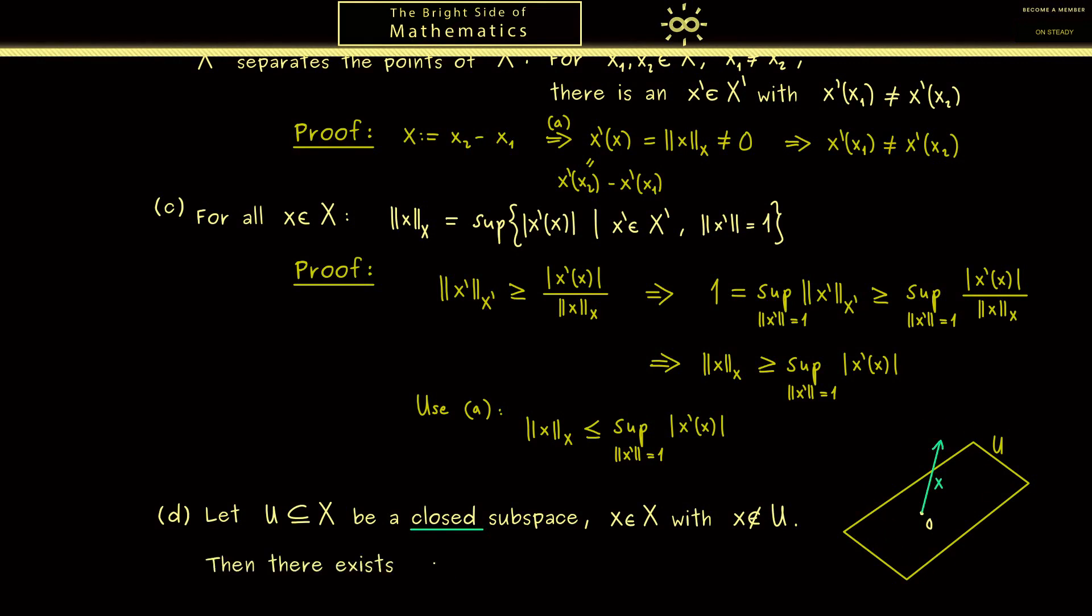Then the claim is there exists a linear functional x' with the property that it is the zero functional when you restrict it to the subspace U. So for each point in U you get out zero when you put it into the functional x'. However when you put in the vector x you don't get out zero. In other words it's a non-trivial functional. And that's the important fact: for closed subspaces we find such non-trivial functionals.